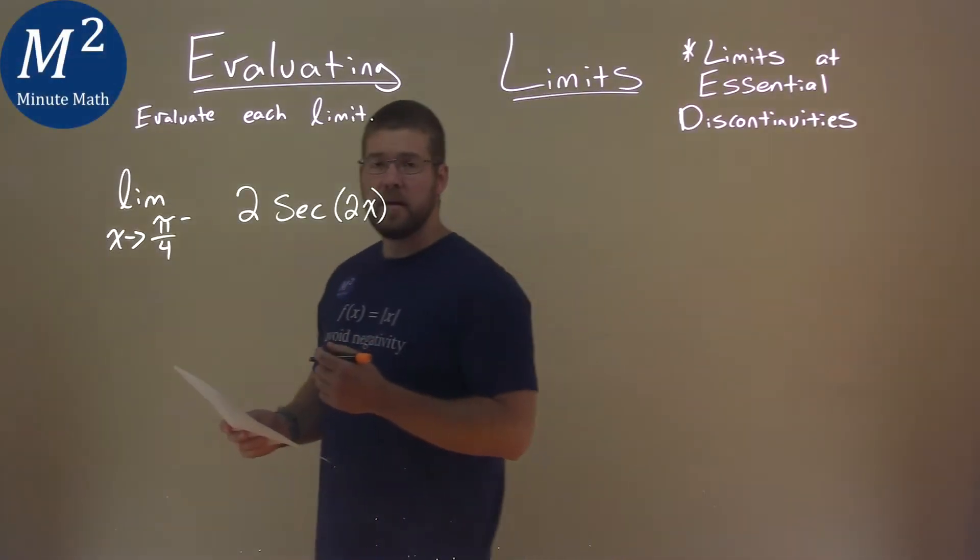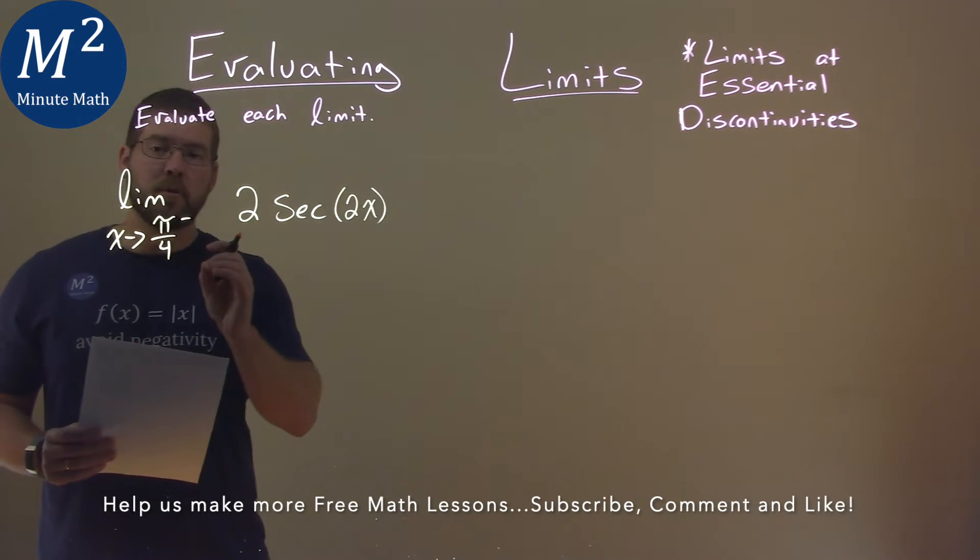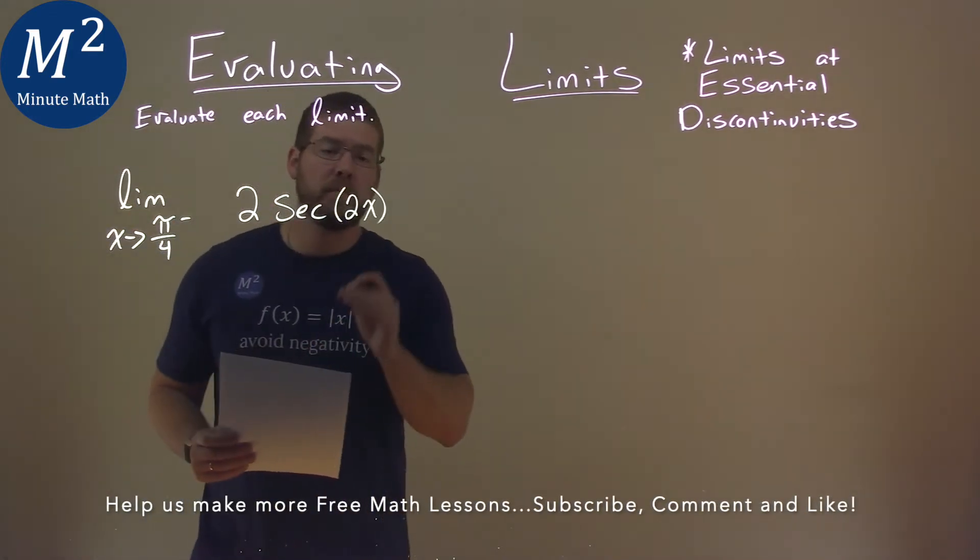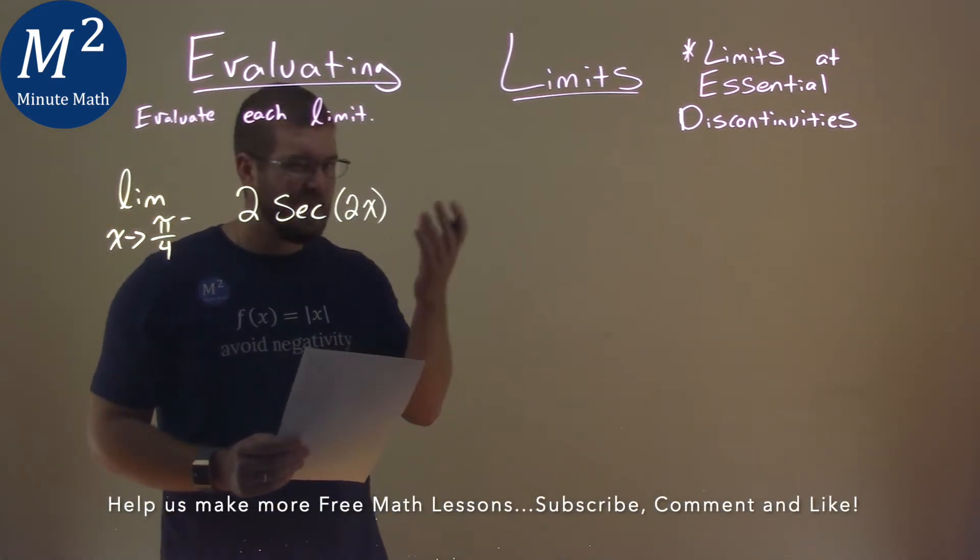We're given this limit right here. The limit as x approaches pi over 4 from the left of 2 times the secant of 2x, and we're going to evaluate this limit.